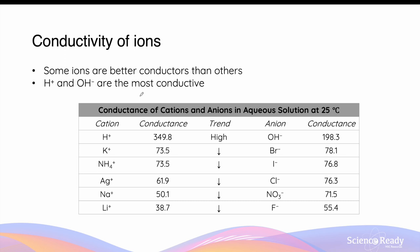Although all ions contribute to the conductivity of a solution, some ions are better conductors than others. Hydrogen ions from acids and hydroxide ions from bases are the most conductive ions in solution because they are the most mobile — they move around the solution most easily due to their smaller sizes compared to other ions. This gives you a better idea for comparing relative conductivity between ions in acid-base chemistry.